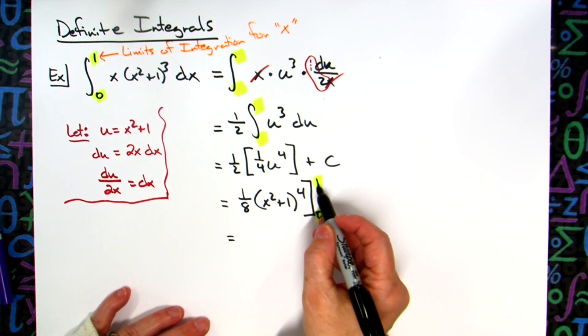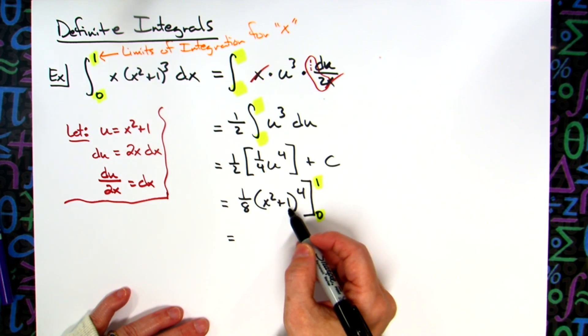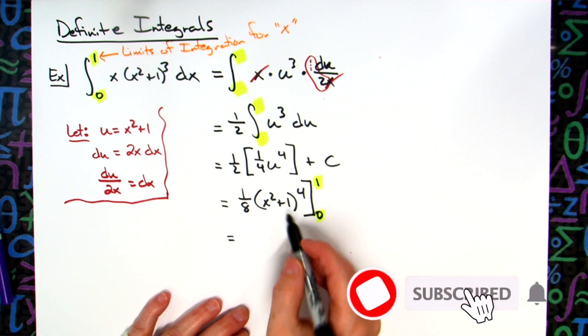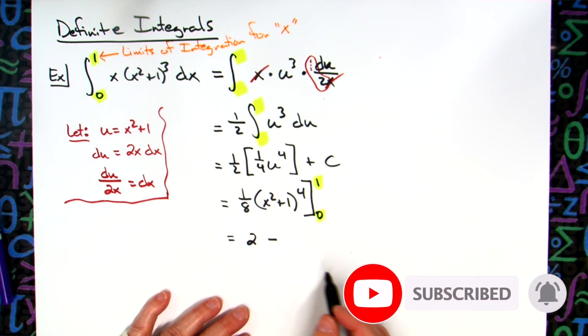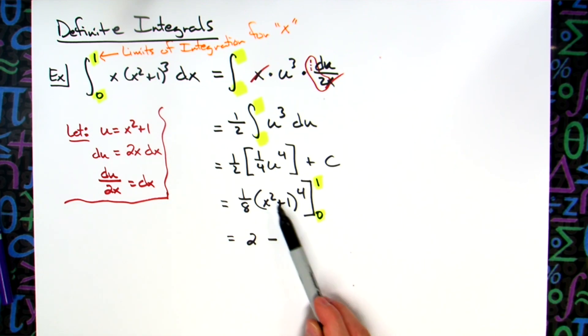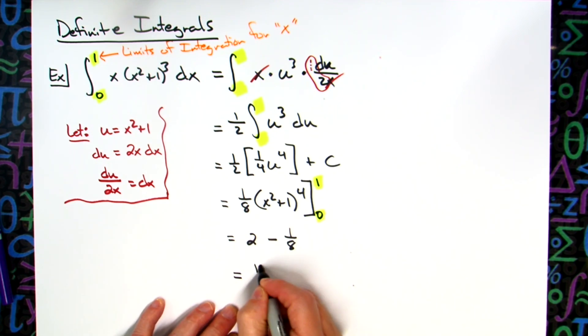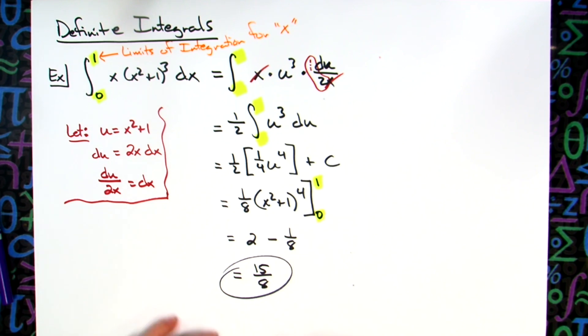Let's plug some things in. I plug in one. One squared is one plus one more is two. Two to the fourth: two times two is four times two is eight times two is 16. And then 16 over eight is two. Then we're going to subtract. We're going to plug in our zero. Zero squared plus one is one to the fourth, still one times one eighth, so one eighth. So 15 eighths, because that'd be 16 over eight minus one eighth. Without a calculator, we don't need to go to a decimal. 15 over eight.